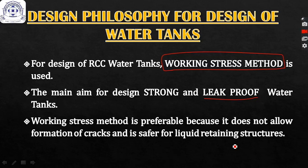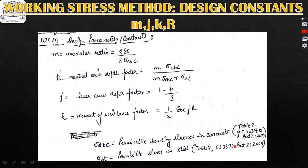Working stress method is based on the theory that forces acting on any structural element should be less than the allowable stresses in that element. For example, the tension force should be less than the allowable tensile stresses, and the bending stresses must be less than the allowable bending stresses.